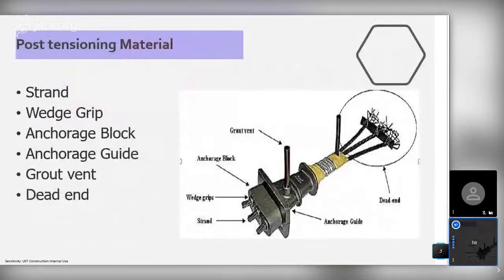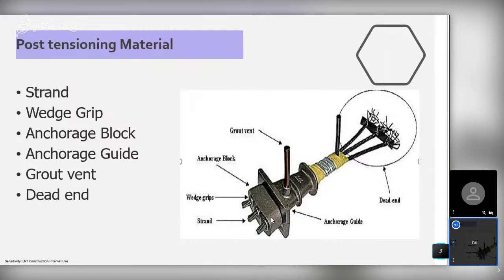The materials used in post-tensioning system are: first, strands — made of MS steel — and wedge strips also of MS steel. Then the anchorage block, which is the end corner where all the strands are placed and from where we stress. Next, grout vents. In the post-tensioning system, inside the GI duct, we place all the strands — the number of strands depends on the design. We complete the PT process, then do concreting. Once concrete achieves the required strength, we start stressing the strands inside the GI duct.